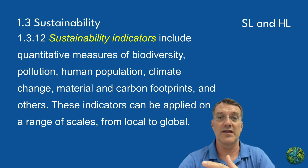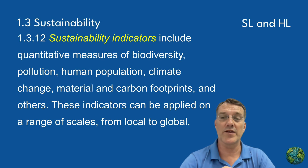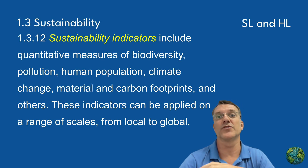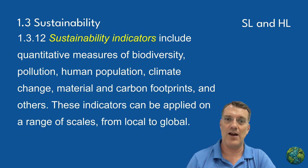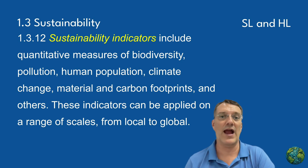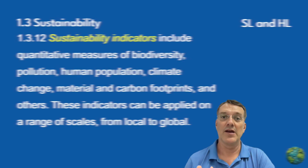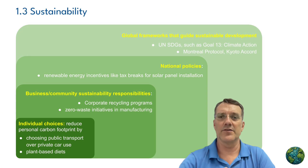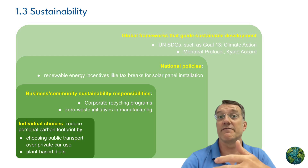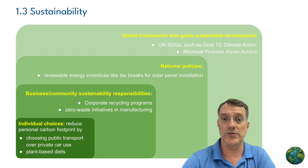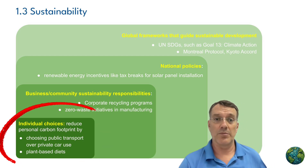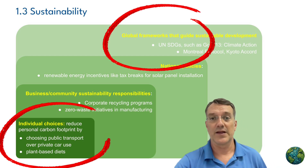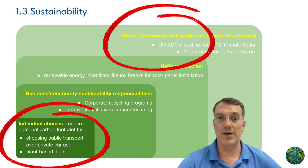Sustainability indicators are quantitative measures that help us assess how sustainable our practices are. These indicators can be applied at various scales, from the individual all the way up to the global. Let's look at some examples.